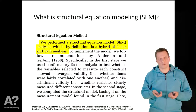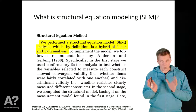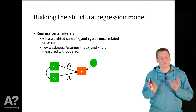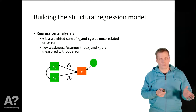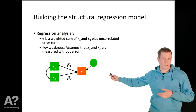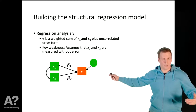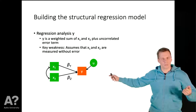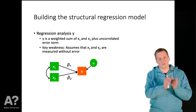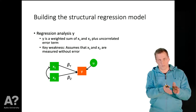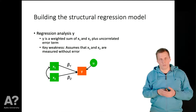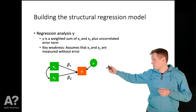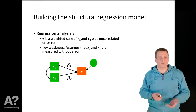Structural regression model combines these two analysis approaches. To understand what SRM is, we can start with the basic regression analysis model. The basic regression model makes the important assumption that X1 and X2 are measured without any measurement error — they are the quantities of interest rather than measures of those quantities. If the assumption of no measurement error fails, the regression coefficients beta1 and beta2 will be inconsistent and biased.